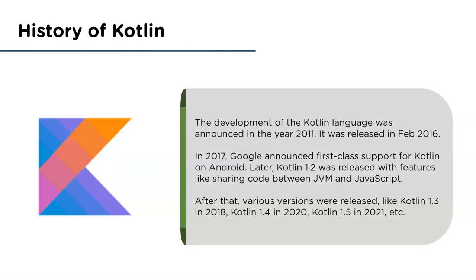Now let's learn some history of Kotlin. The development of Kotlin was announced in 2011. In 2012, the first web demo was released along with a new logo, and it became open source. In 2014, kotlinlang.org was released. In 2015, new features were added including companion objects and multiple constructors. After a long development process, Kotlin 1.0 was released in February 2016, developed by JetBrains in Russia.